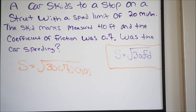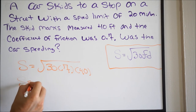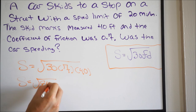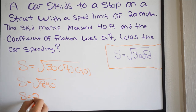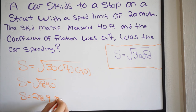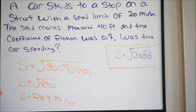So we do 30 times 0.7 times 40, and we get 840. So S equals the square root of 840, and doing that in our calculator, the square root of 840 gives us 28.9 miles per hour. So that was their actual speed — they were going about 8 or 9 miles per hour above the speed limit. And that's how you go about solving it.